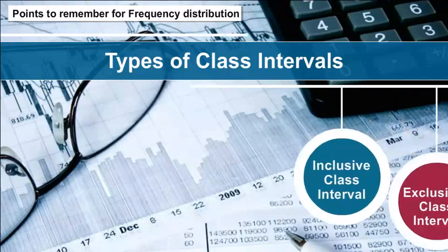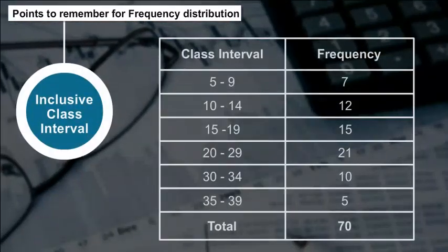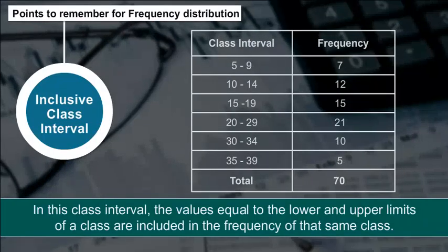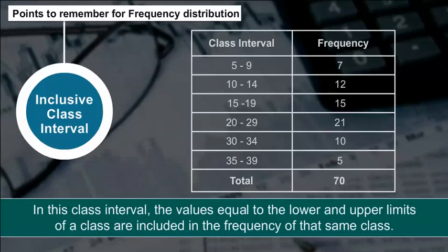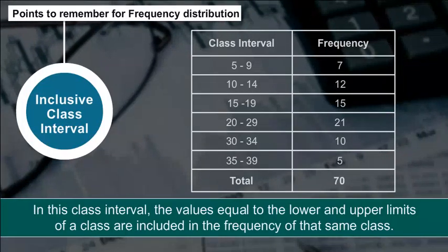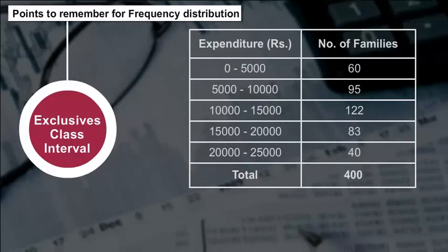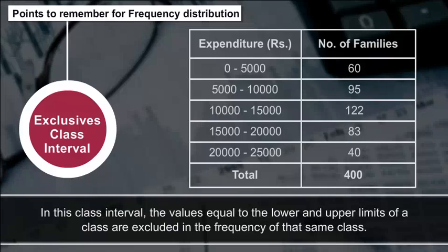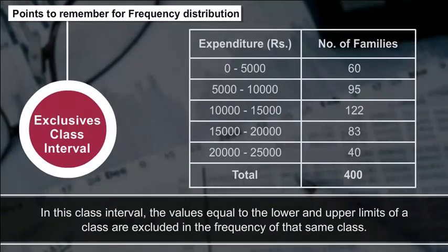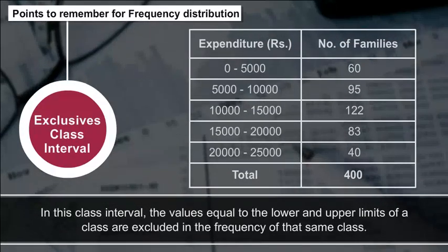Types of class intervals: Inclusive class interval — the values equal to the lower and upper limits of a class are included in the frequency of that same class. Exclusive class interval — the values equal to the lower and upper limits of a class are excluded from the frequency of that same class.